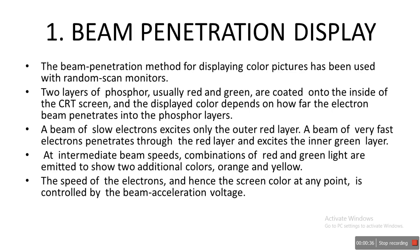First we will learn about the beam penetration method. The beam penetration method for displaying color pictures has been used with random scan monitors. Two layers of phosphor, usually red and green, are coated onto the inside of the CRT screen, and the displayed color depends on how far the electron beam penetrates into the phosphor layer.